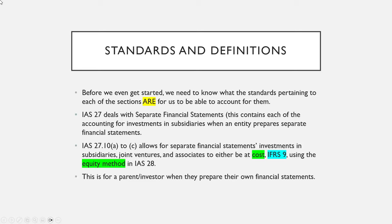Let's start with IAS 27 — Separate Financial Statements. This contains accounting for investments in subsidiaries, joint ventures, and associates. It's a requirement for an entity when they prepare their own financial statements. Remember, there are consolidated financial statements, but the parent also has to prepare their own. In their own financial statements, it allows these investments to either be recorded at cost, recorded at IFRS 9 as a financial instrument, or they can use the equity method for investments in associates falling under IAS 28.